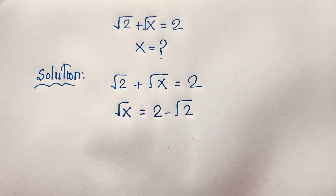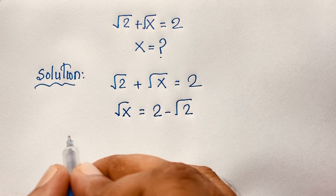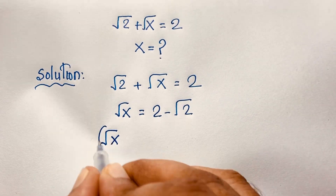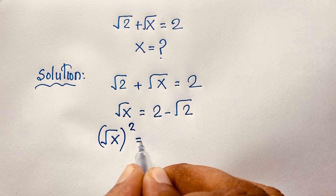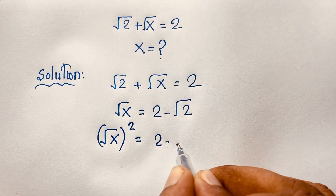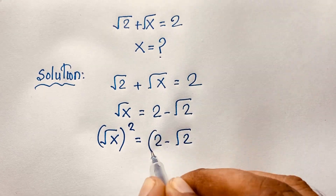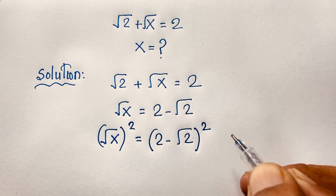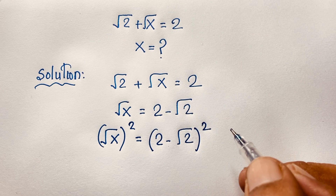Now I apply a whole square to both sides. So it will be: (square root x)² is equal to (2 minus square root 2)². I use a whole square on both sides.